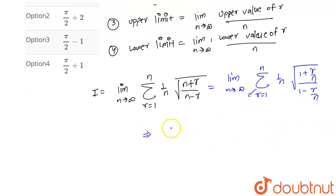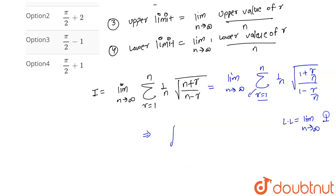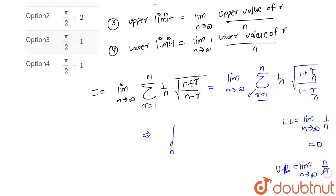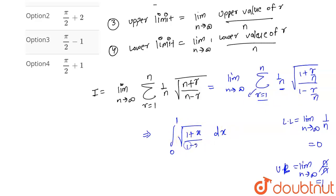Now applying the changes: the summation sign becomes an integration. The lower limit is calculated as limit n→∞ of (1/n), which equals 0. The upper limit is limit n→∞ of (n/n), which equals 1. So 1/n becomes dx, and we get the integral from 0 to 1 of the square root of (1+x)/(1-x) dx.